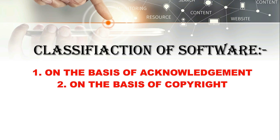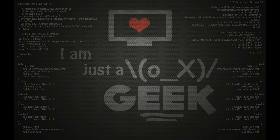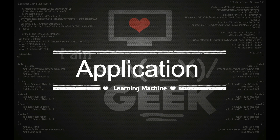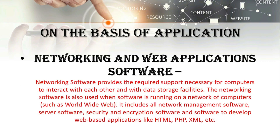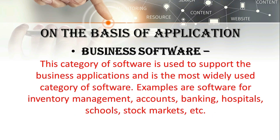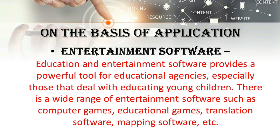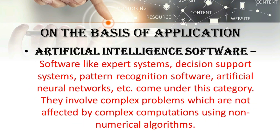Now let's come to the classification. Software engineering is classified in two types: on the basis of application, and on the basis of copyright. In the application category: network and web application software, reserved version software, business software, entertainment software, artificial intelligence software, and scientific software.